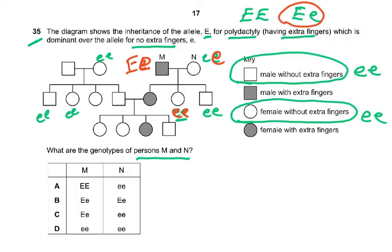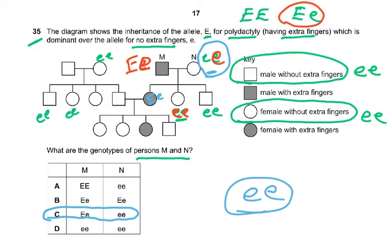This person N also has to carry the dominant allele, so N must be big E, small e, because the small e comes from the mother. The answer is C. You must read the question carefully and identify the recessive trait — that's the key. People with the dominant trait can be either big E big E or big E small e, but those showing the recessive trait only have one possible genotype. That clue helps you solve the pedigree chart.